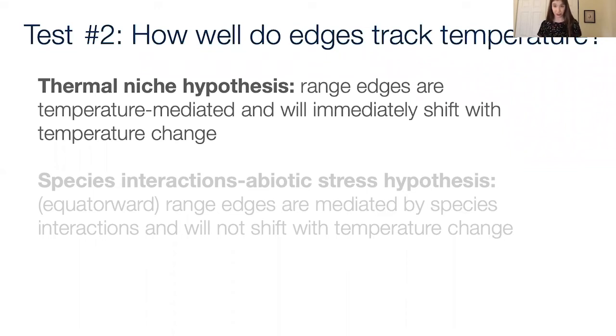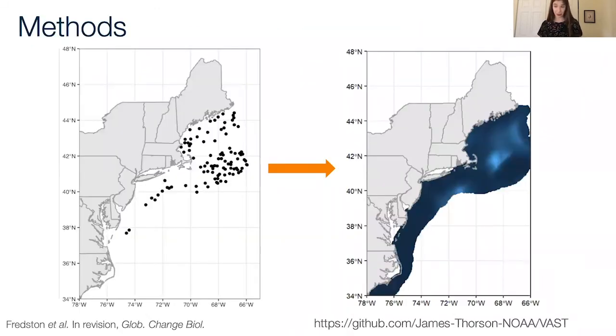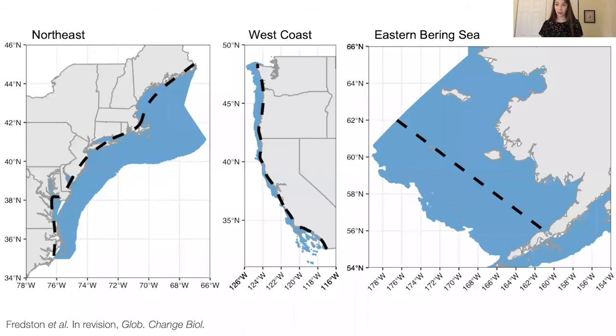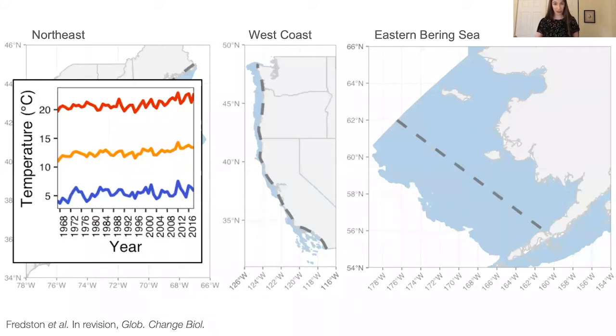Because of that, we decided to zoom in on this one hypothesis and ask how well are range edges in the ocean tracking temperature at all. For this, we zoomed out to the entire country or three regions across the country. We use a spatial temporal model to convert the survey observations into a continuous surface that estimates biomass, which is shown here on the right. This model is called VAST. It allowed us to compare among the different surveys which use different methods in the same units. These are the three regions. We also use the U.S. West Coast and the Eastern Bering Sea. We chose these partly because they have very different warming histories.